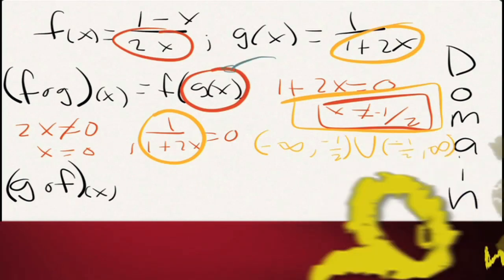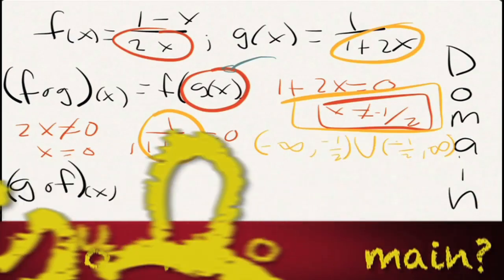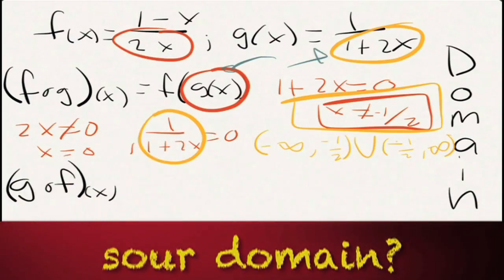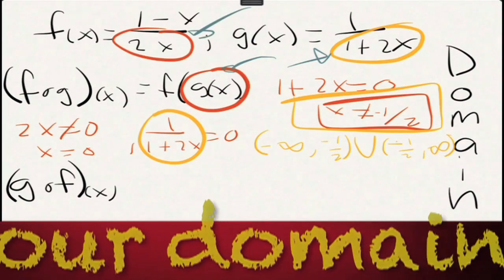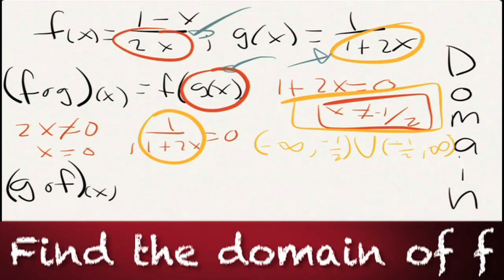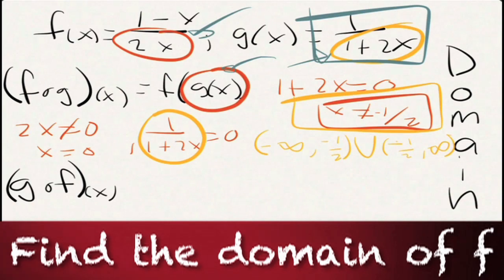What sours that domain is negative one half — we can't put negative one half in there because it destroys the whole thing. That's how we found that restriction. And once we put g(x) into f, nothing else makes the domain bad, because g(x) is never going to be zero anyway.